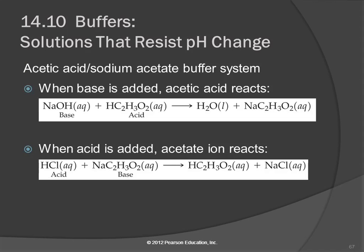Let's look more specifically at these buffers. Acetic acid and sodium acetate is a buffer system. Acetic acid, HC2H3O2, is a weak acid — it's not one of those six strong acids. If it's not on the strong acid list, it's a weak acid. And in order for it to be a buffer system, it has to be a weak acid.